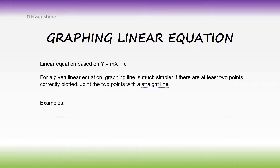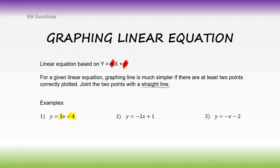Look at the examples of linear equations. y equals 3x minus 4 — here, 3 is m and negative 4 is c. m is the slope or gradient, while c represents the y-intercept or constant value. In the second equation, negative 2 is m and 1 is the y-intercept or c. In the last example, negative 1 represents the slope m, and negative 2 is c, the y-intercept.